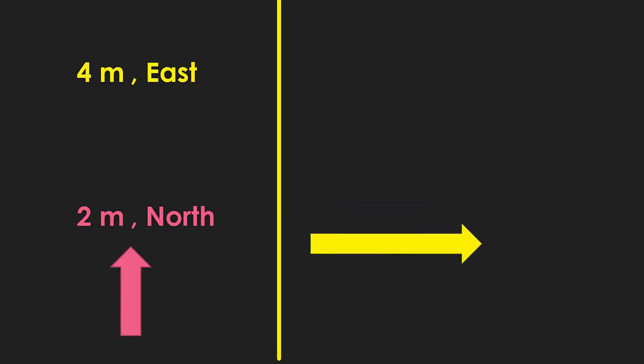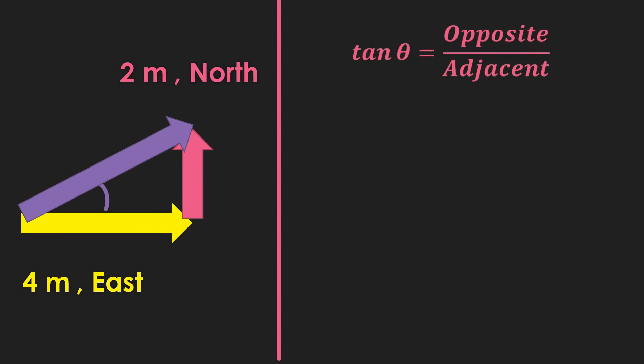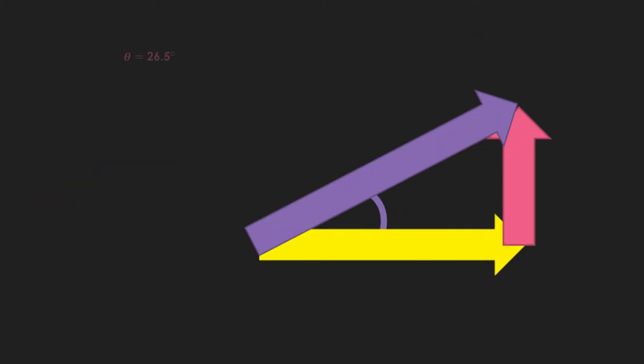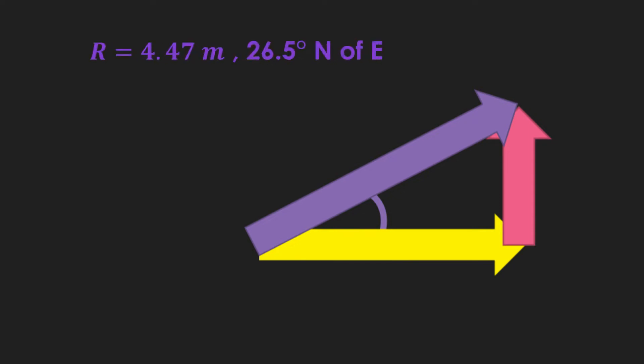I know we shouldn't draw, but since it's our first time, we need to visualize our right triangle in order to determine which is the opposite and adjacent sides. Now for the direction, we will use the tangent function and isolate the theta to find our angle. Determine which is the opposite and adjacent side, then substitute the given values. We get 26.5 degrees. Since our angle is drawn from the east and going upward heading north, we read this as 26.5 north of east. We find our resultant vector to be 4.47 meters, 26.5 degrees north of east.